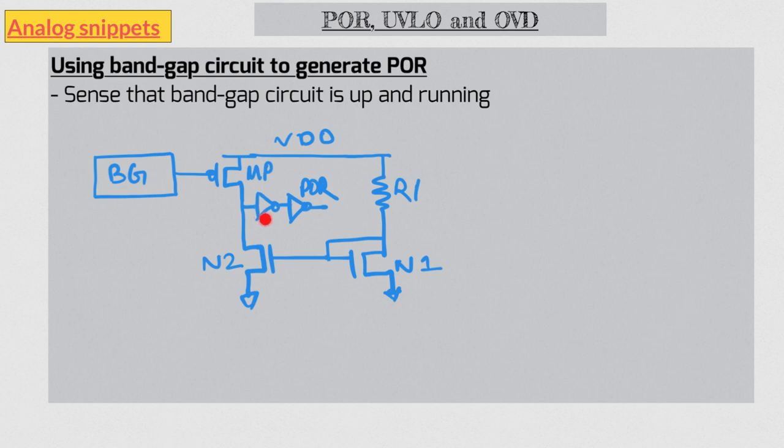You can similarly devise a POR circuit using reference voltage of band gap circuit and a voltage comparator. A note about the inverter which immediately follows this current comparator: a supply ramp is a comparatively slow signal. A supply ramp happens in several milliseconds. Also, a band gap startup can be a relatively slow process. As a result, this comparator output can have a very slow rise time, and that means this voltage can spend a long time in intermediate voltage values.